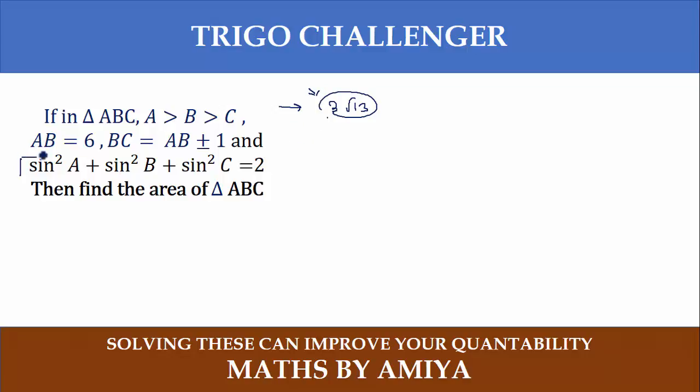So we have two learnings of the day. The first learning is if you have sin²A + sin²B + sin²C = 2, it means we are working on a right-angled triangle. We have a right-angled triangle ABC only if sin²A + sin²B + sin²C = 2.